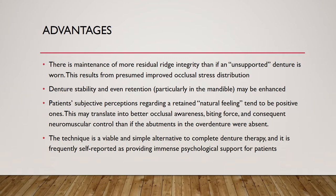There are various advantages to an overdenture. It maintains ridge integrity rather than having an unsupported denture worn. This results from a presumed improved occlusal stress distribution — even when you have two teeth present in the arch, there is some stress distribution on those teeth, making it less than a complete denture for a fully edentulous arch.